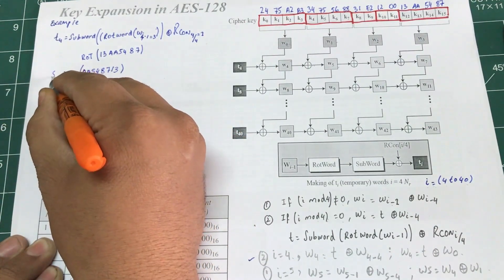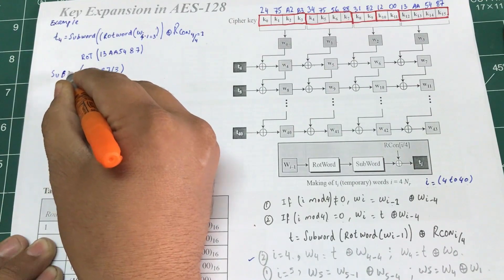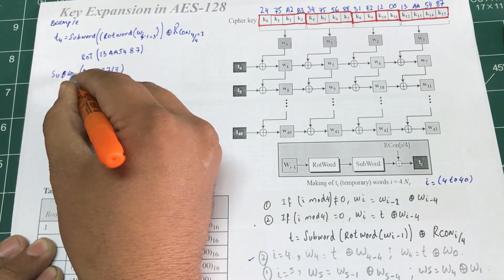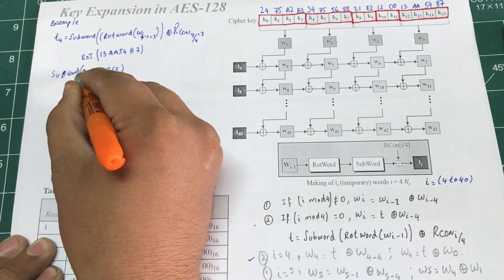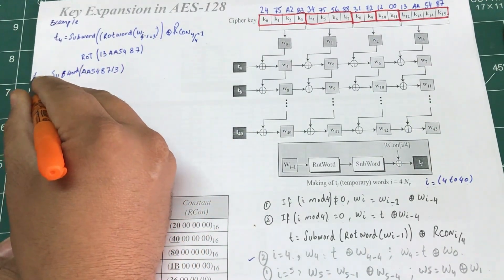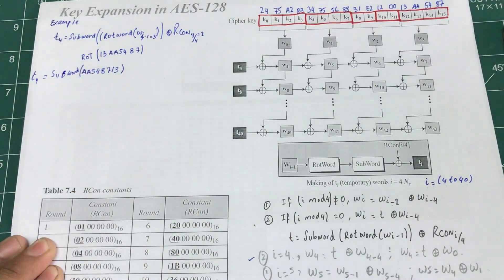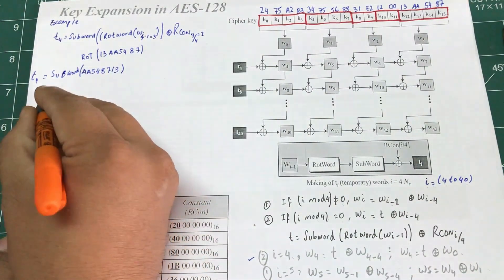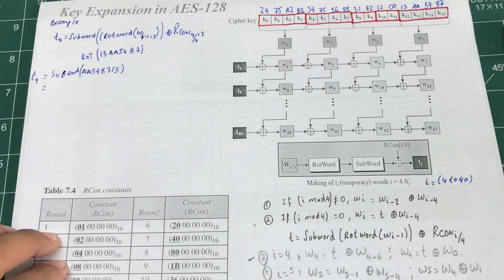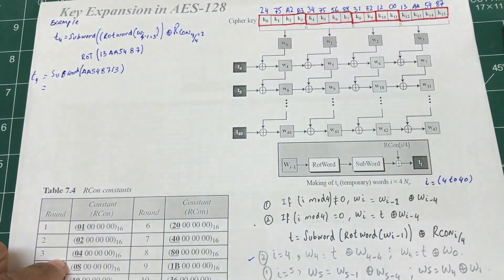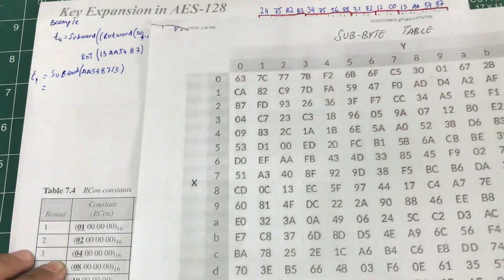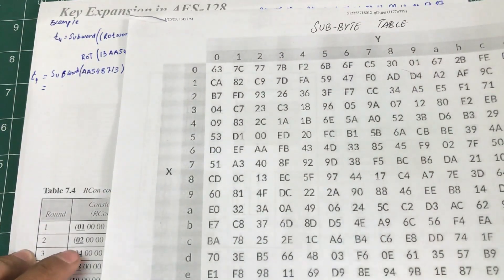Then I need to take SubWord of it to find the value of T4. In order to take SubWord, I don't need to go through the mathematical process — we've learned that already. I'm going to use my handy S-box table, which is right here.